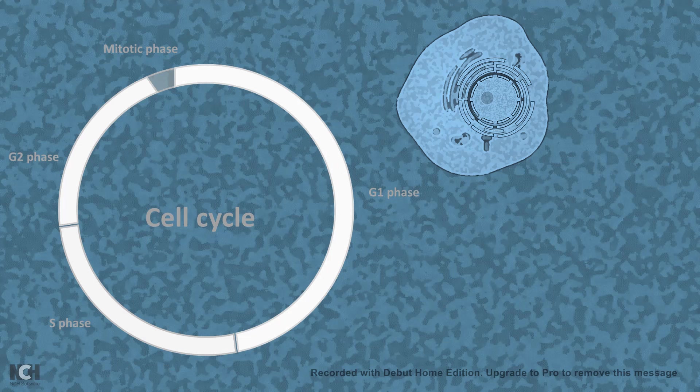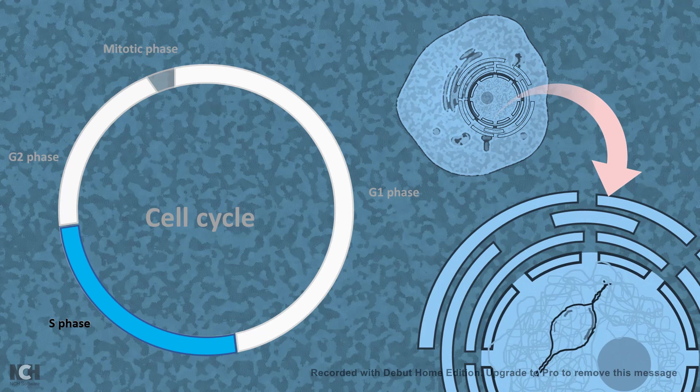We all know that in the S phase of the cell cycle, DNA replication takes place. And replication initiation takes place at the very transition state from G1 to S.